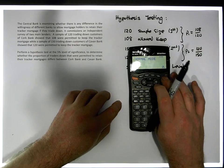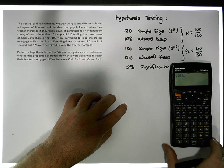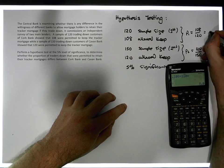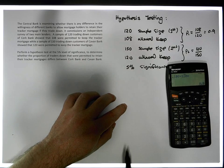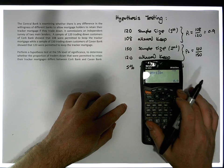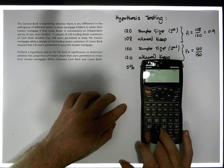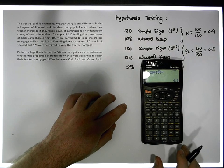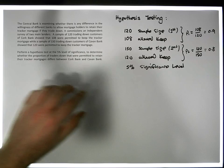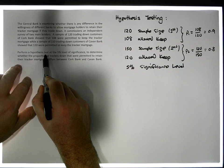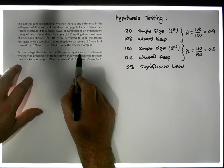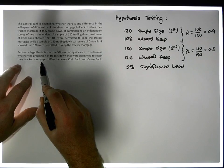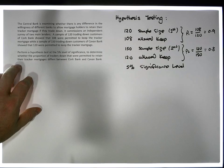Now the proportions as decimals: 108 divided by 120 gives us a value of 0.9. So about 90% of the customers for the first sample were allowed to keep their trackers. The second proportion is 120 divided by 150, which gives a value of 0.8. So about 80% in the second bank were allowed to keep their trackers. The question being asked is to perform a hypothesis test at the 5% level of significance to determine whether the proportion of traders down that were permitted to retain their tracker mortgages differs between the Cork bank and the Cavan bank.